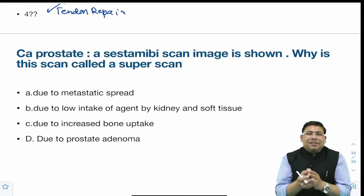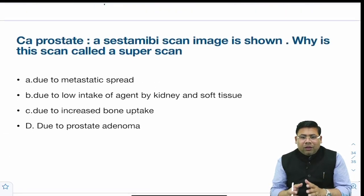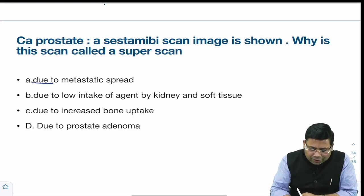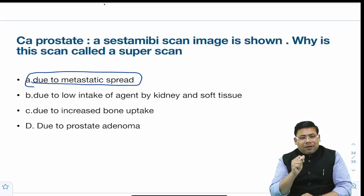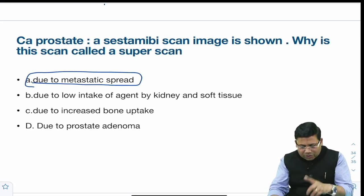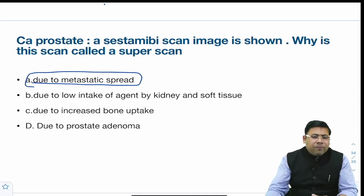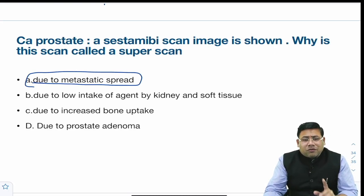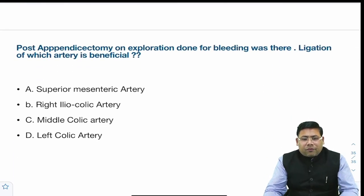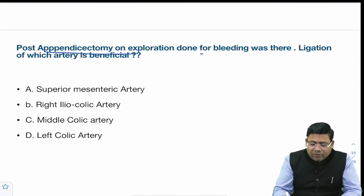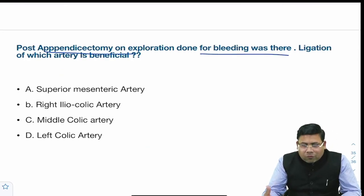There was a question on CA prostate — a bone scan was done showing a super scan appearance. It is called a super scan because it is used to evaluate metastatic spread. The image depicted metastatic spread of prostate cancer, which is why it is known as a super scan.